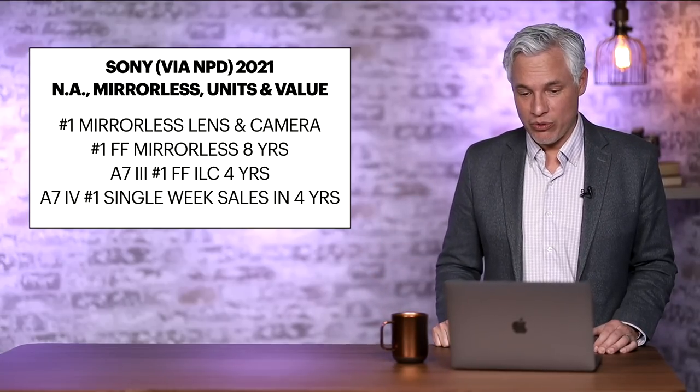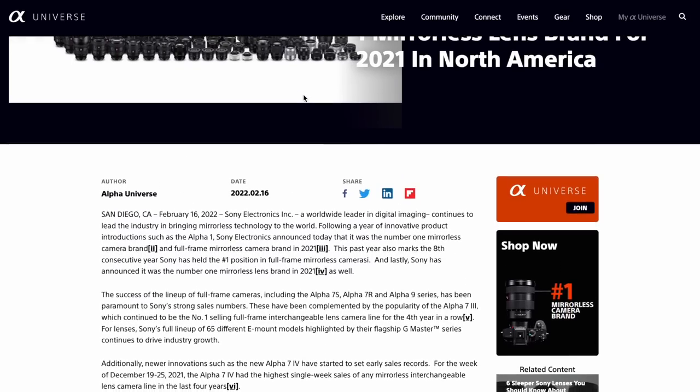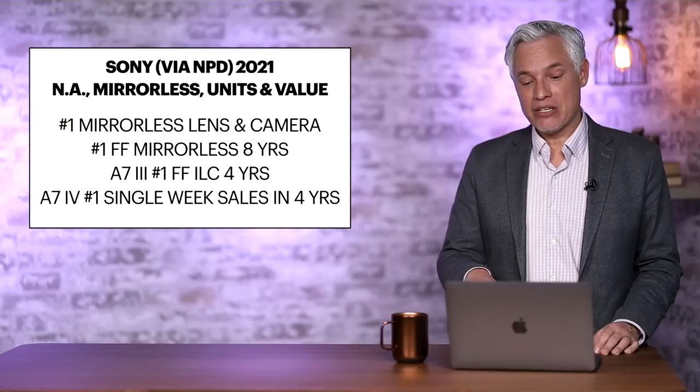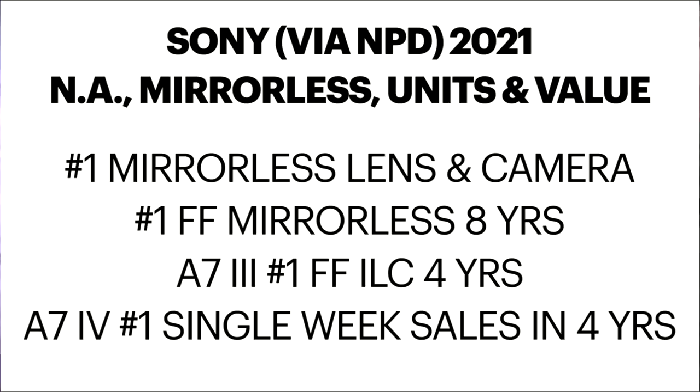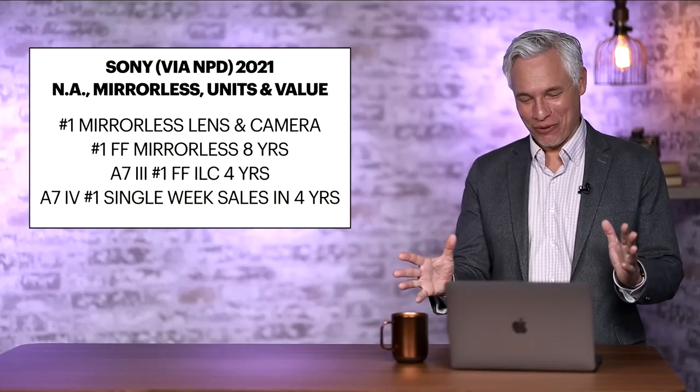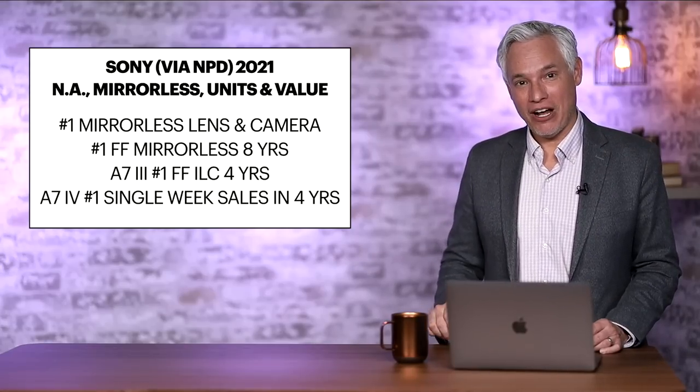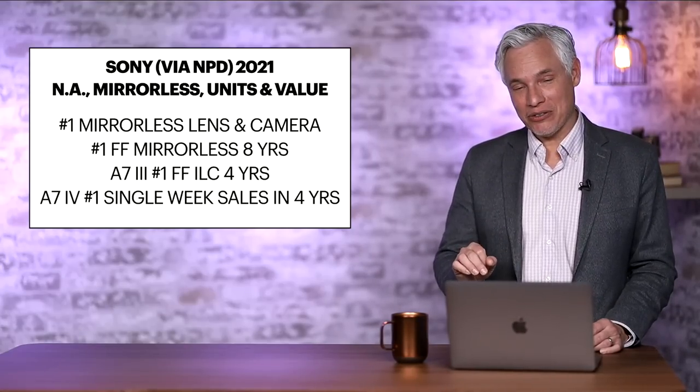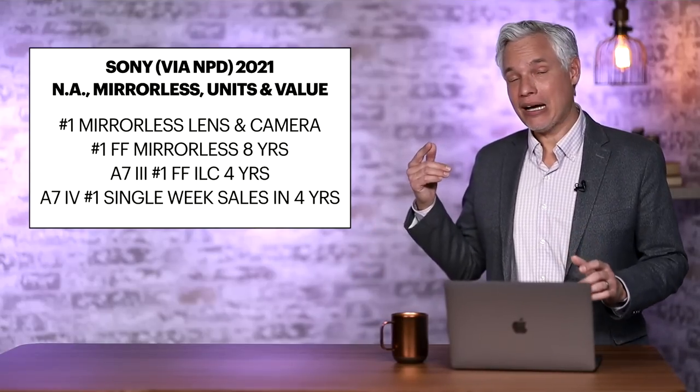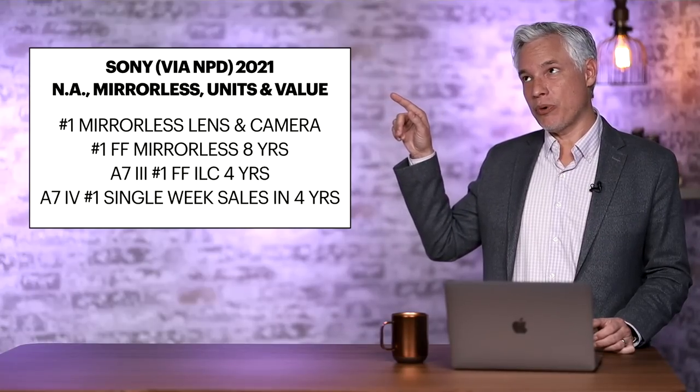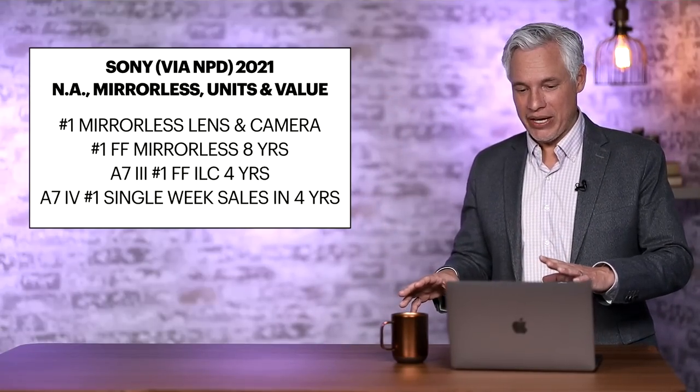Here's the headline from just this past week. Sony works with a research company called NPD that analyzed 2021 data and finally pulled it all together for us here in 2022. Sony is number one for mirrorless lens and camera sales. Sony has been the number one full-frame mirrorless camera manufacturer for the last eight years. The a7 III was the number one full-frame interchangeable lens camera for four years running. And the Sony a7 IV had the best week of sales in the last four years. All those are impressive numbers.